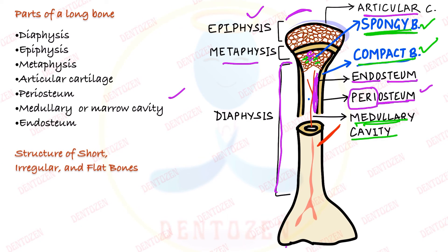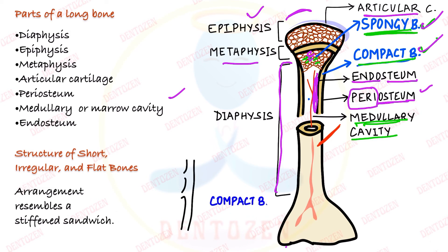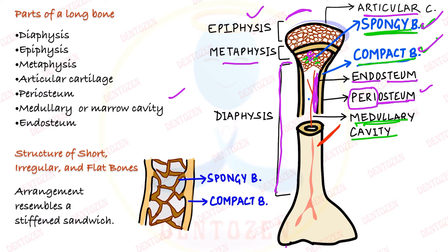Short bones also have both types — spongy and compact bone — but they are arranged like a sandwich: spongy bone is present in the center and is sandwiched between two layers of compact bone on the outside.